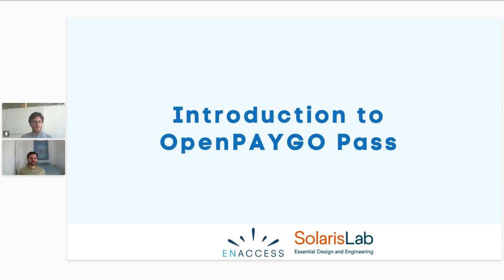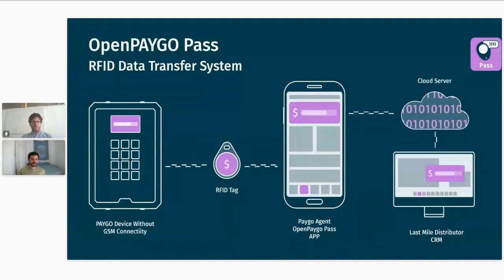The OpenPayGo Pass works in areas where there is no GSM coverage or no mobile money coverage, which was the key driver for the project, while still allowing data feedback. Comparing it to OpenPayGo Metrics, which requires network coverage, and OpenPayGo Token, which usually also requires network coverage to receive SMS and mobile money — the Pass doesn't. The other key differentiator is that it's much cheaper than the GSM solution. And compared to the token-based method without GSM, it's much simpler to use.